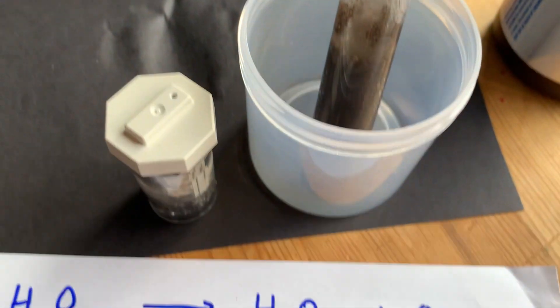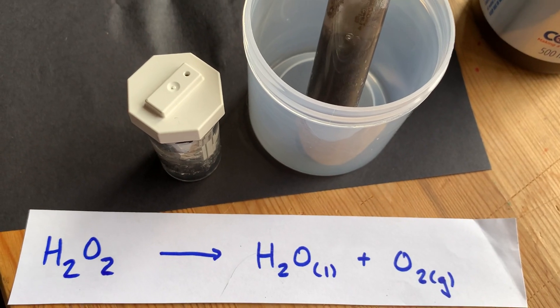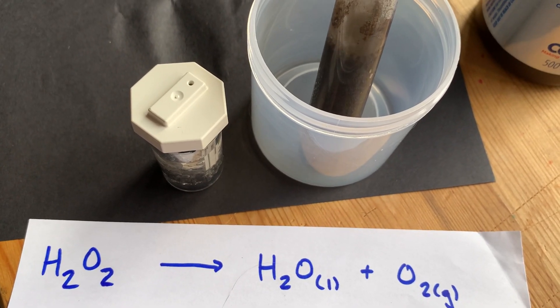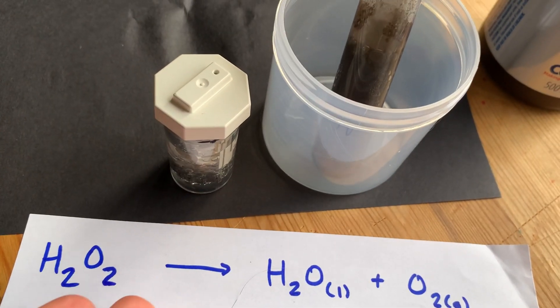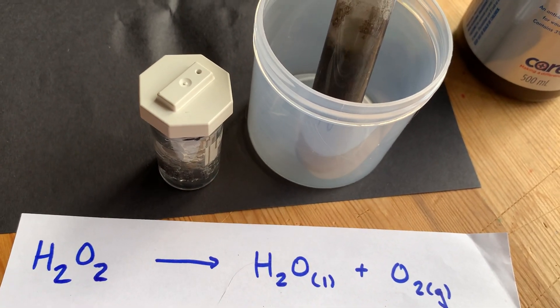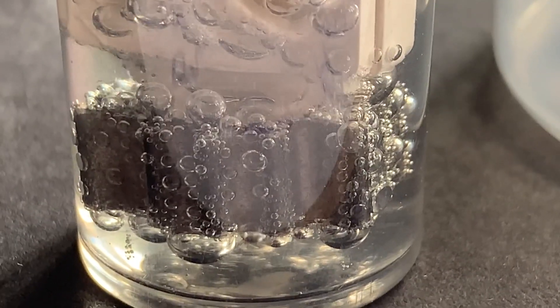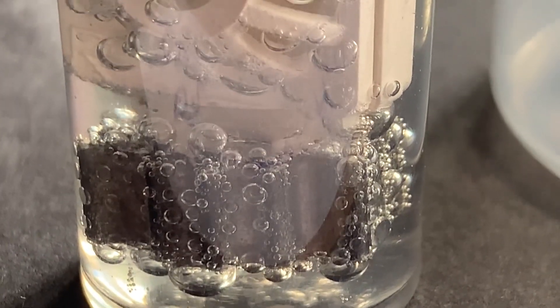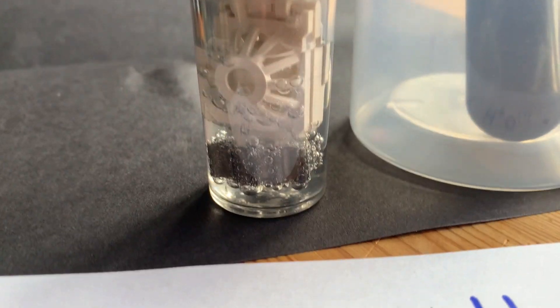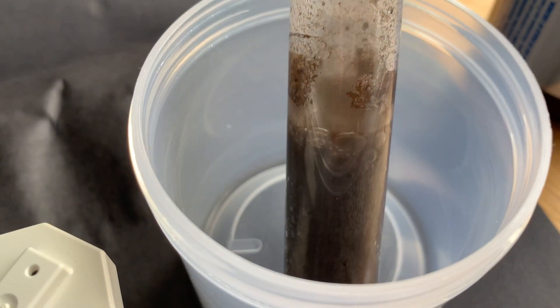So there you have it, hydrogen peroxide decomposing into water and oxygen gas, both on its own, which does proceed on its own despite the fact that we weren't able to watch that happen, being catalyzed by this metal from a contact lens container—I believe it's platinum, but don't quote me—and with powdered manganese dioxide, which is really going to town here.